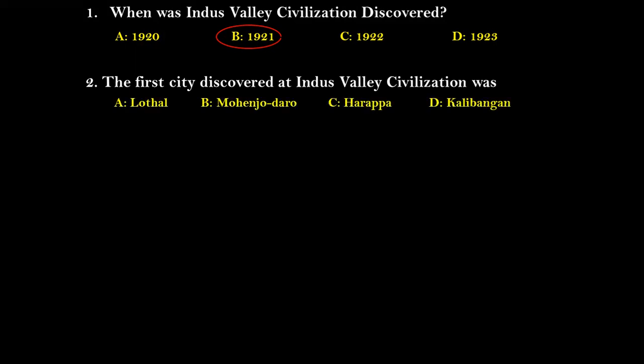Question two: The first city discovered at Indus Valley Civilization was — options are Lothal, Mohenjo-Daro, Harappa, and Kalibangan. The right answer is option C, Harappa, because the Indus Valley Civilization is also sometimes called the Harappan Civilization, as Harappa was the first city discovered.